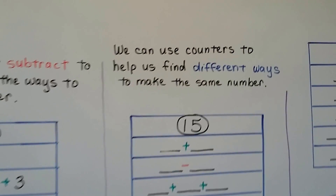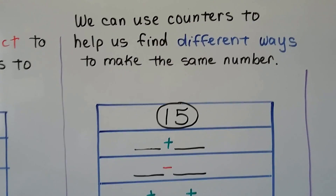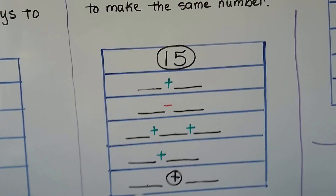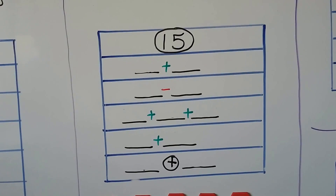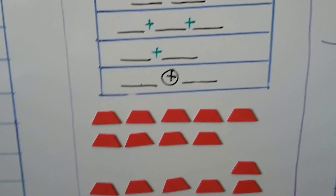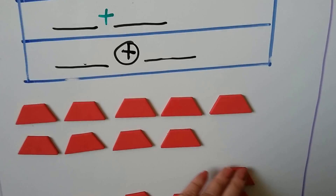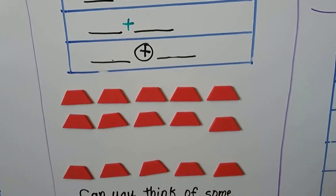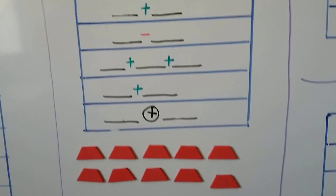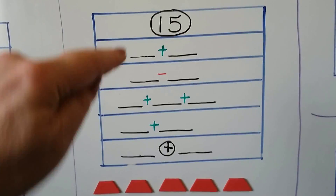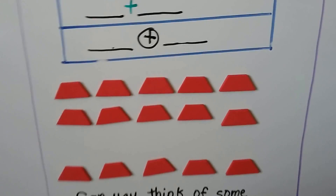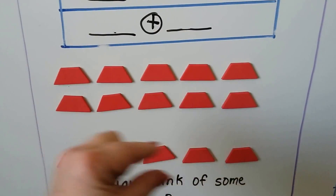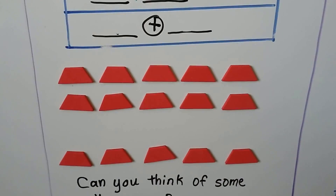We can use counters to help us find different ways to make the same number. Here we need to find a way to make 15. We need to add two numbers together to make 15. So I have 15 counters here. If we put them in different groups, we can have a 10 and a 5 — that would make 15.